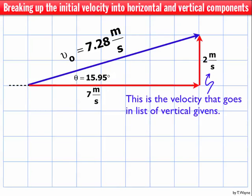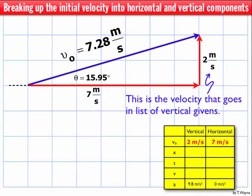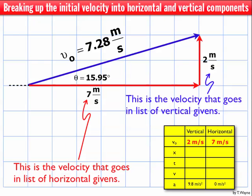So the 2 meters per second is vertical, so that's going to go in the vertical column for my table of givens. The 7 meters per second, that's in the horizontal direction, so that'll go in the horizontal column for the table of givens.